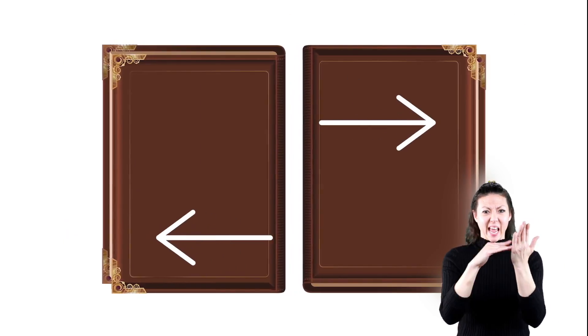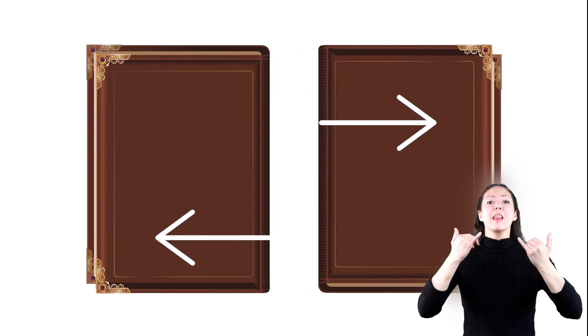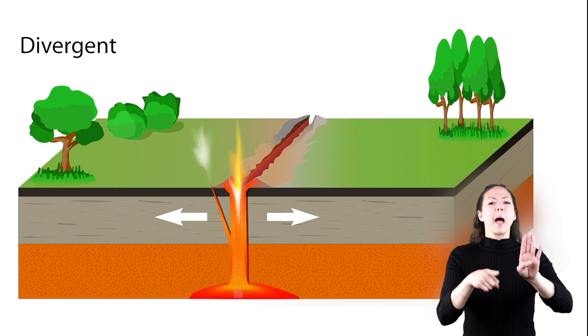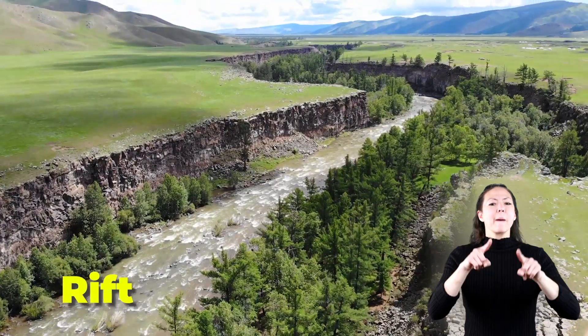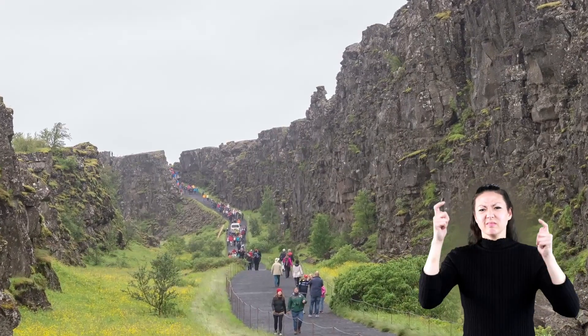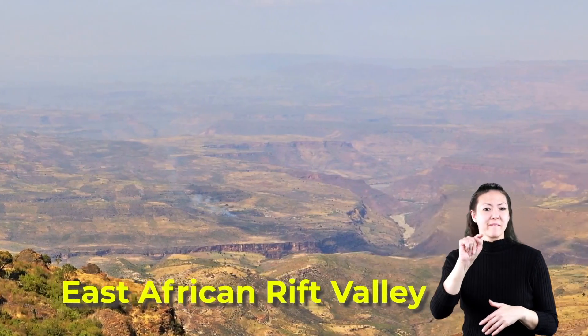Now imagine those two textbooks again, but instead of pushing them together, you and your friend pull them away from each other. That's what happens when you have divergent boundaries. The area of land where this occurs is called a rift, and in those places you might find giant rift valleys. Examples include the East African Rift Valley, the Galapagos Rise, and the Mid-Atlantic Ridge.